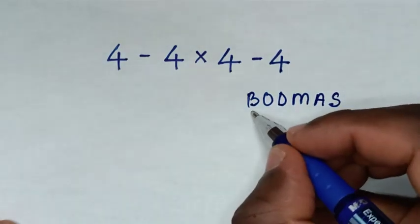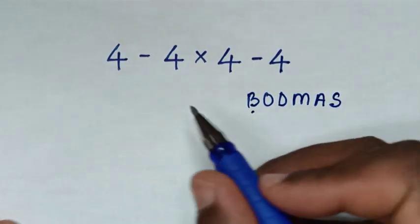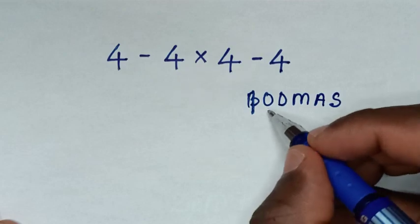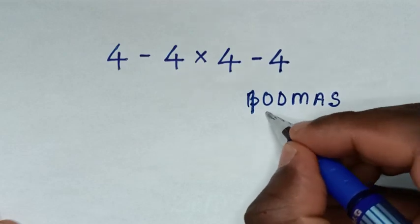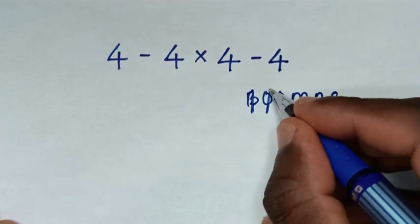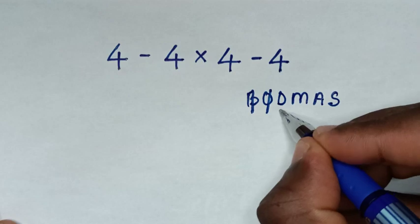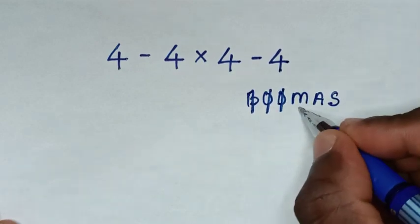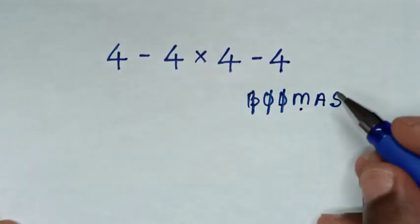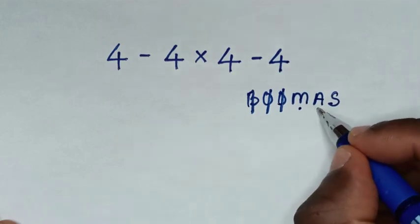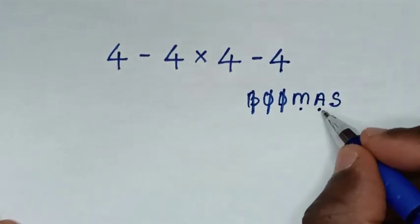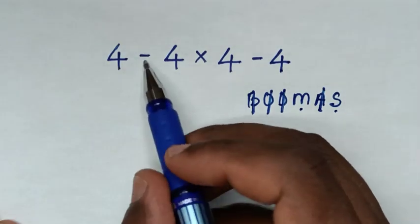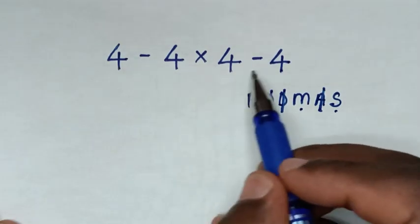B is bracket — we don't have brackets in this problem. O is orders — we don't have orders in this problem. D is division — we don't have division. M is multiplication — we have multiplication. A is addition — we don't have addition. S is subtraction — we have two subtractions, this one and this one.